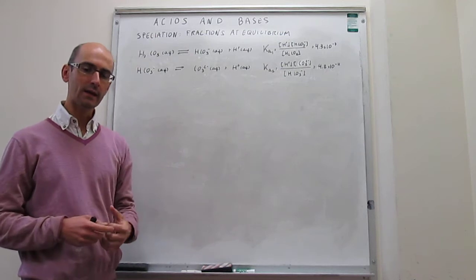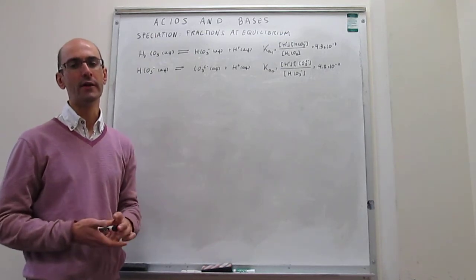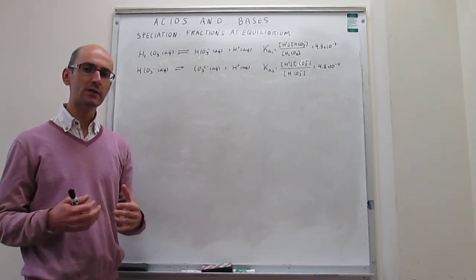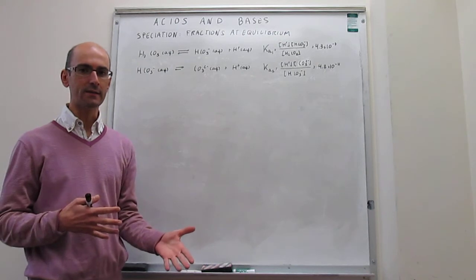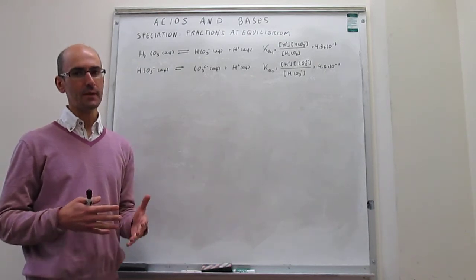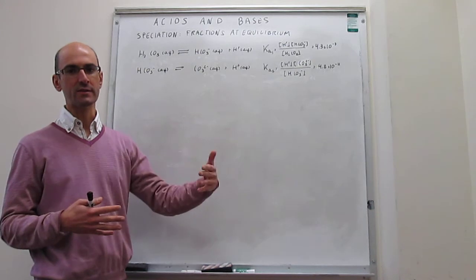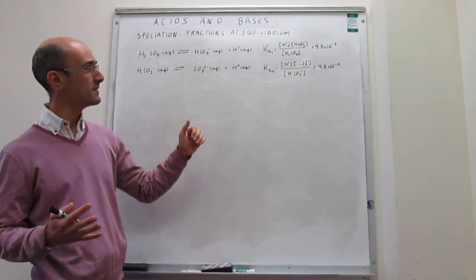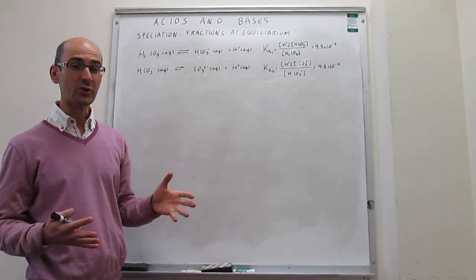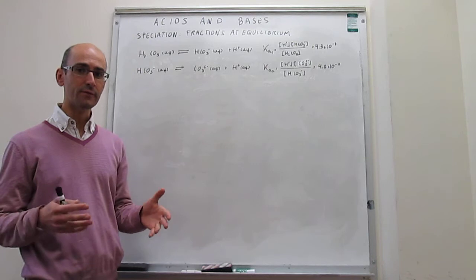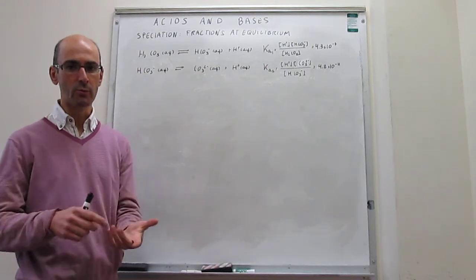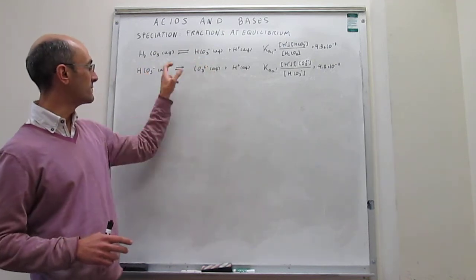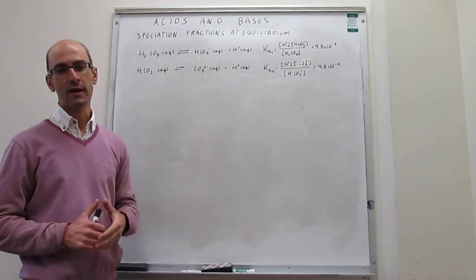In this video we take this set of equilibria a little further and ask questions about speciation. The question is: you start by adding carbonic acid to water, but as dissociation takes place you generate some bicarbonate and also some carbonate. So in the end you have a mixture — some undissociated carbonic acid, some bicarbonate, and some carbonate.